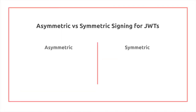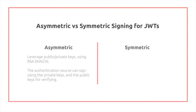A quick review of cryptography — I mentioned HMAC and so on. First, there is the notion of asymmetric signing algorithms. These leverage public-private keys using RSA-SHA256 in the case of JWT. The authentication source can sign using the private key, and the public key can be used for verifying. Anyone can have access to the public key.